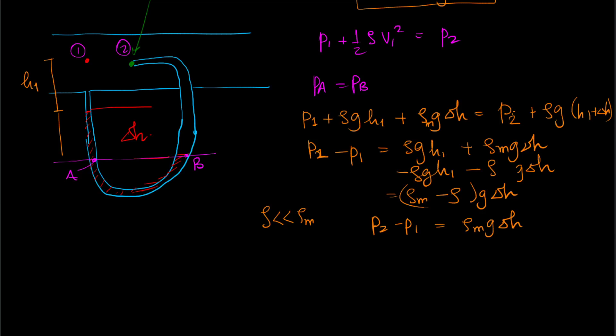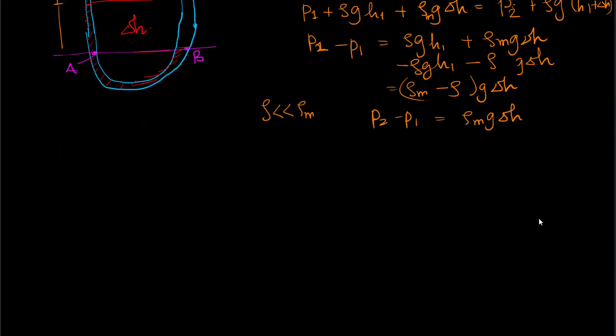Let us now look at how static and stagnation pressure measurements can be combined into one nifty device, and that particular device is called a pitostatic tube.